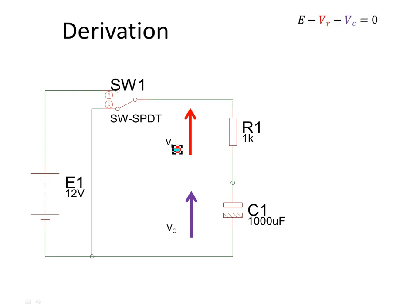From Kirchhoff's law we'll say that this voltage E, the supply voltage, minus this voltage, minus this voltage is equal to zero. That's from Kirchhoff's second law.